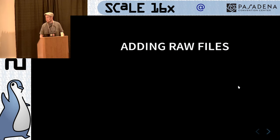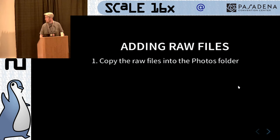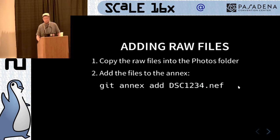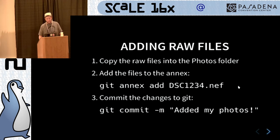To add your raw files to Git Annex after you've initialized your repo, copy your raw files into your Git folder. I personally use an ExifTool script that copies and renames all my stuff, but you can use your file manager, Rapid Photo Downloader, cp, rsync — so many ways, all valid. Add the files to the annex with git annex add and your file name — .NEF for me since I shoot Nikon, but you can substitute .CR2, .ORF, or whatever you want. Then commit the changes to Git with git commit -m and a commit message.